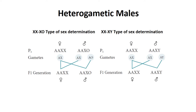In the XO type, females are homogametic and produce only one type of egg, all carrying the X chromosome. The male produces two types of sperm — one with the X chromosome and one without any sex chromosome. When an X-carrying sperm fertilizes the egg, the individual will be female; when the sperm without a sex chromosome fertilizes the egg, the individual will be male.